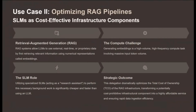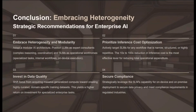SLMs also serve a strategic cost-reducing role in RAG — retrieval-augmented generation — pipelines. RAG is a process that allows LLMs to retrieve and use external proprietary data to generate more accurate responses. The core mechanism relies on generating embeddings, which are numeric AI representations of data chunks — a high-volume, high-frequency compute task. If an LLM is used to generate these embeddings, the massive volume of input tokens severely inflates operational expenses. By utilizing specialized SLMs for this background work, enterprises can generate semantic representations faster and significantly cheaper, dramatically optimizing the total cost of ownership.